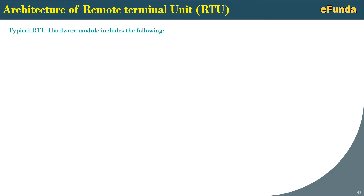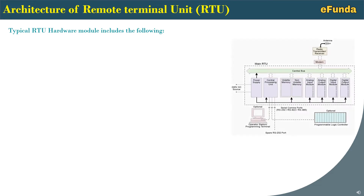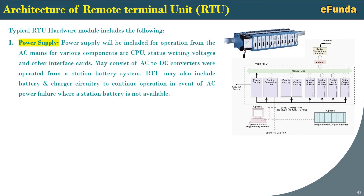The typical RTU hardware module includes the following. Referring to the block diagram of the RTU system, one can see the main RTU and associated components connected — that is a modem and RTU radio receiver and antenna, similarly optional output programmer station, programmable terminal, or optional programmable logic controller. The central bus is connected with a power supply, central processing unit, volatile memory, non-volatile memory, analog input module, analog output module, digital input module, and digital output.